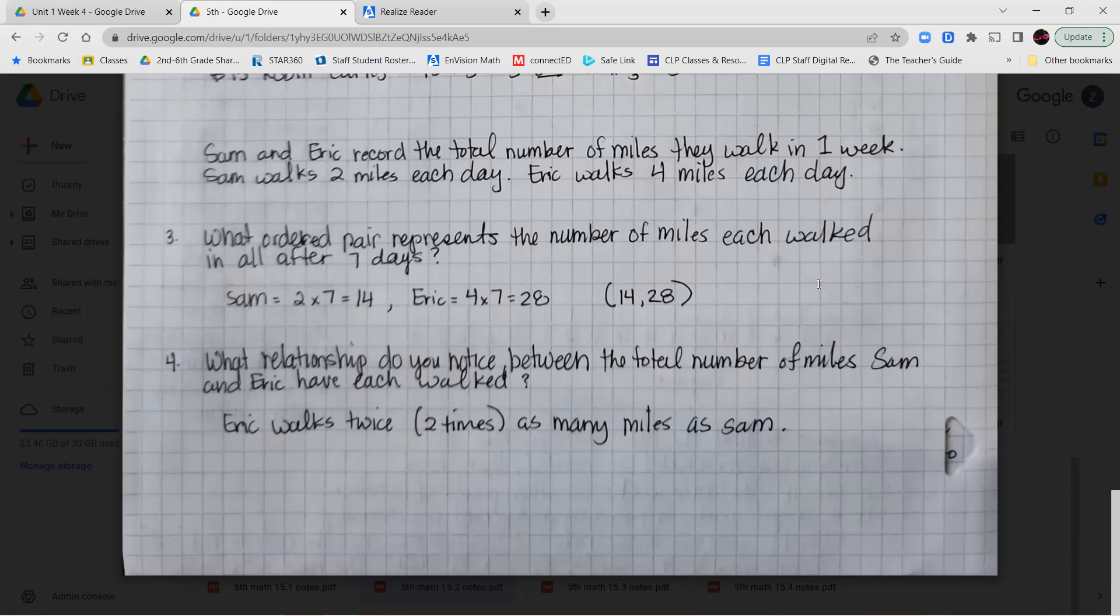For numbers three and four, it says Sam and Eric record the total number of miles they walk in one week. Sam walks two miles each day and Eric walks four miles each day. What ordered pair represents the number of miles each walked after seven days? So to figure out Sam's walks after seven days, you have to do the two miles from each day times seven which would give you 14 miles. And Eric's four miles each day times seven which would give you the 28 miles. So the ordered pair would be 14, 28.